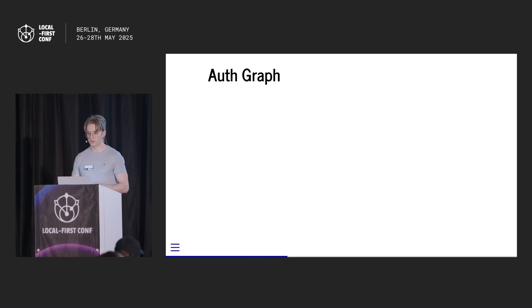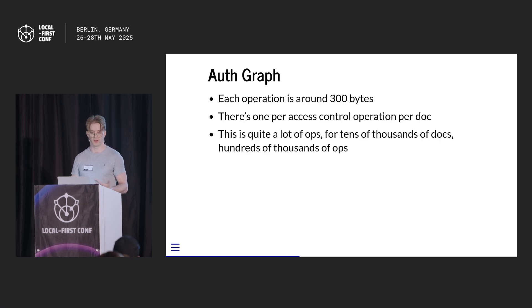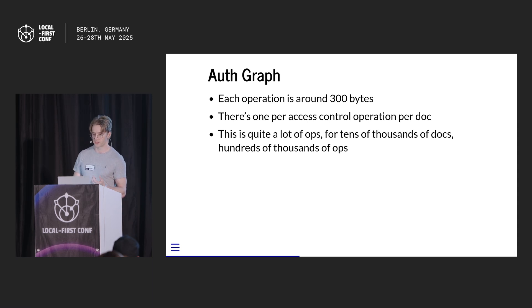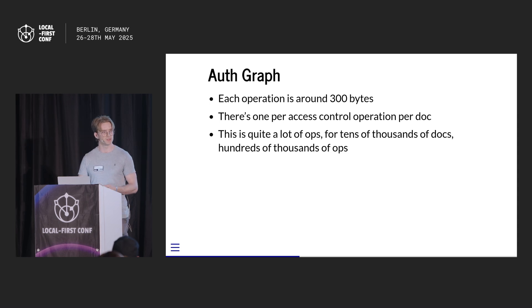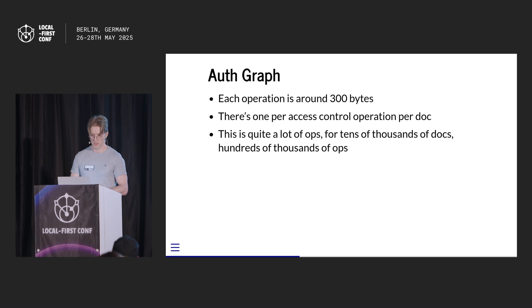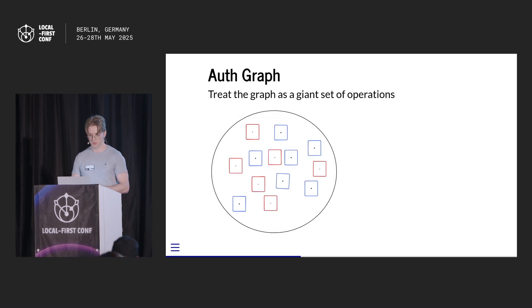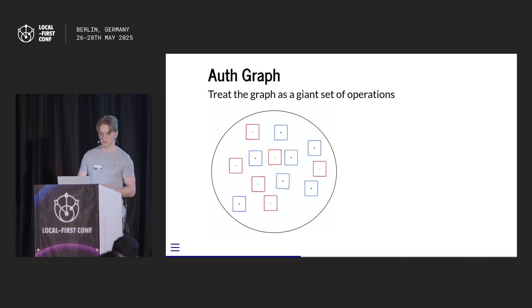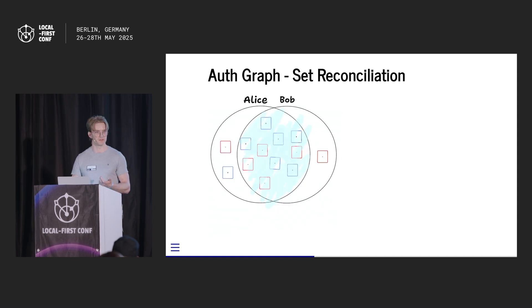How do we synchronize the auth graph? We can't just send the whole auth graph on each sync request because there are a lot of ops — each operation is around 300 bytes, one per access control operation like creating a doc or adding someone. With lots of ops and lots of docs, we're going to have tens of megabytes of ops. We can't be doing that on every sync. So we ignore the internal structure of the auth graph and treat it as a big bag of operations to synchronize. Now we have a set reconciliation problem.